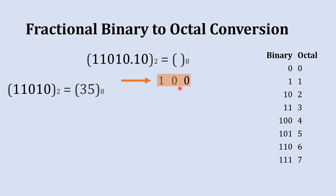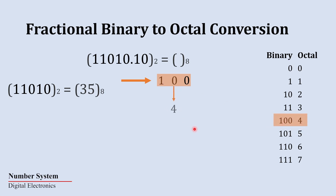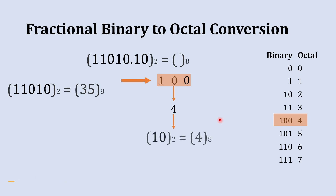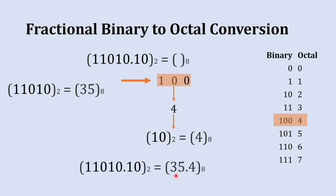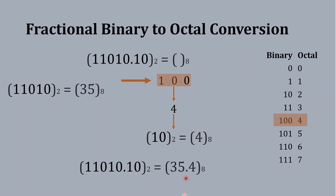The octal equivalent to binary 100 is 4, so we write 4 below it. The octal equivalent to this fractional binary part is .4. Now we club both numbers together, and the final octal equivalent to this binary number is 32.4.